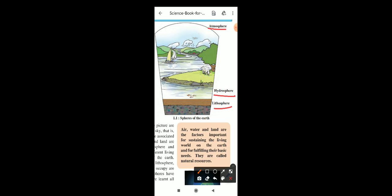Now we can see an important block here. Air, water and land are the important factors which are necessary or very important for the world on the earth. So these fulfill the basic needs. These are called natural resources. They all are called natural resources. Now the atmosphere, hydrosphere and lithosphere together form biosphere.